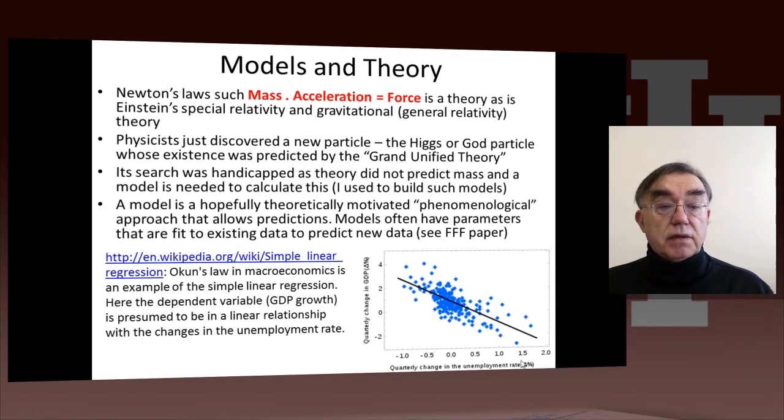So now let's make a little more comments on what a model is, and what a theory is. So Newton's law, which is roughly mass times acceleration is force, is a theory. And Einstein has theories like special relativity and gravitation. And Maxwell has a theory for electromagnetism, Maxwell's laws. And there is something called the grand unified theory, which actually predicts or expects the Higgs particle, which is sometimes called the God particle. So those are theories.